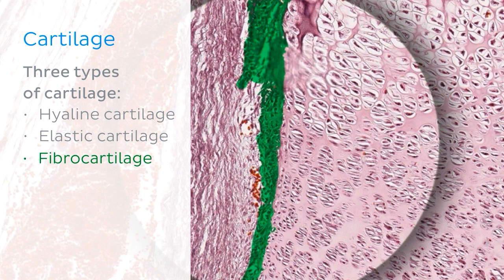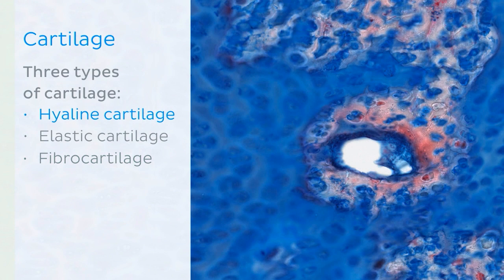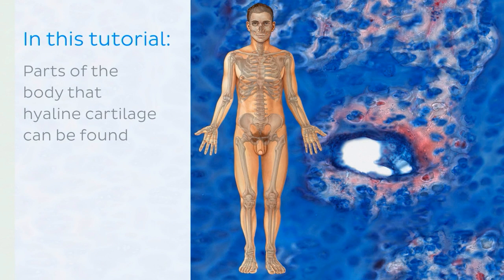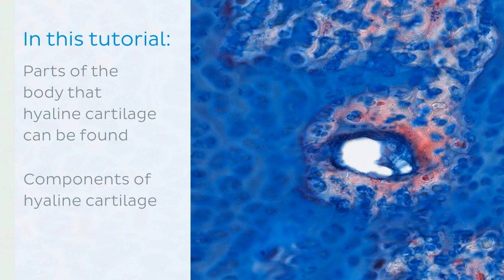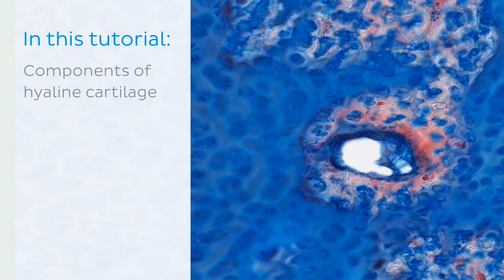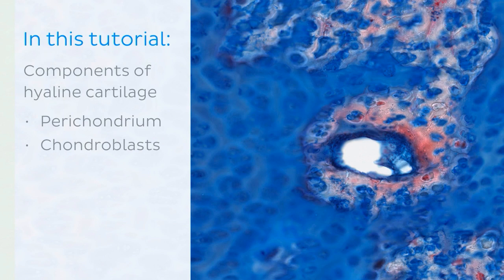We will be discussing the first type on our list, which is hyaline cartilage. In this tutorial we will discuss the parts of the body where hyaline cartilage can be found, and we will also look at many components of hyaline cartilage such as the perichondrium, chondroblasts, and chondrocytes.